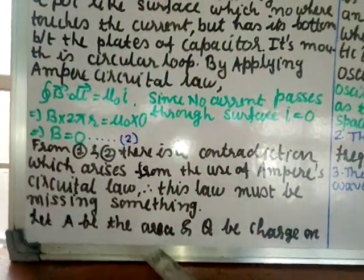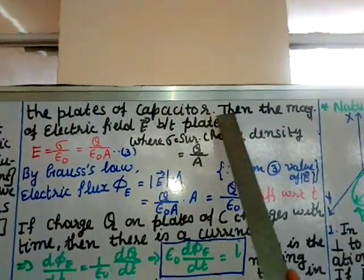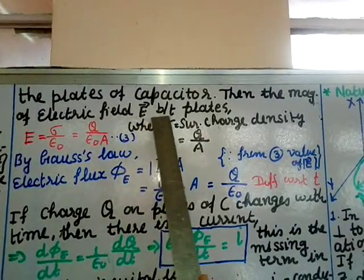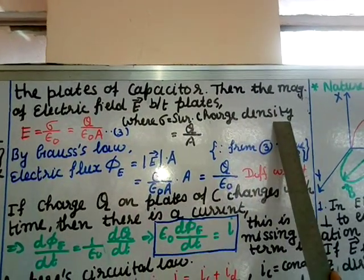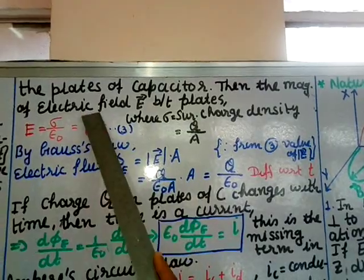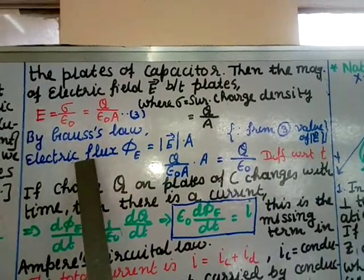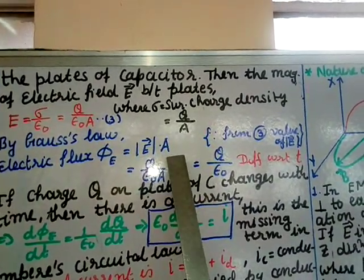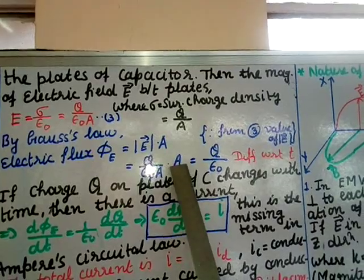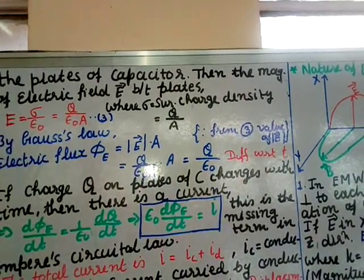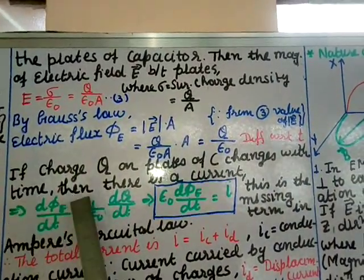Let A be the area and Q be the charge on the plates of the capacitor. The magnitude of electric field E between the plates is given by E = σ/ε₀, where σ is surface charge density = Q/A. So E = Q/(Aε₀). By Gauss's law, electric flux φₑ = E × A = Q/ε₀.